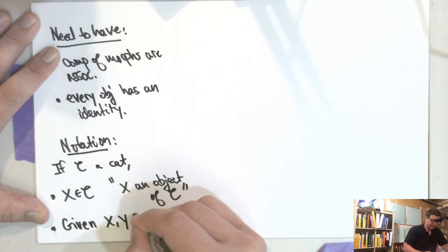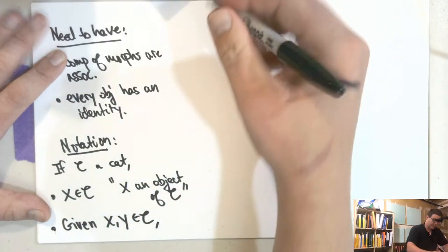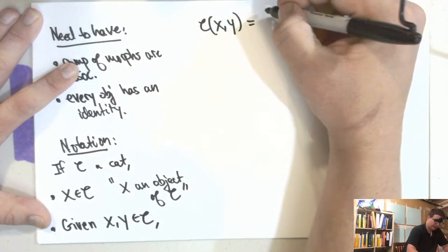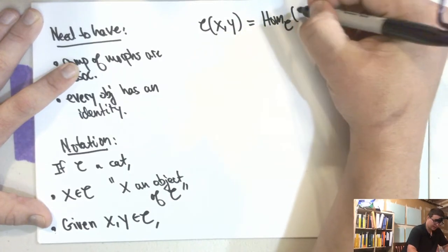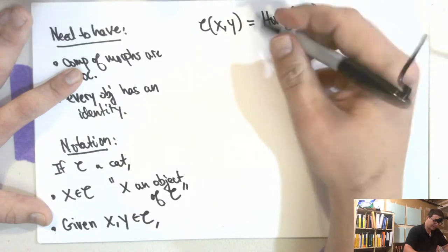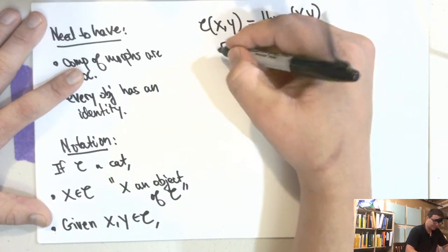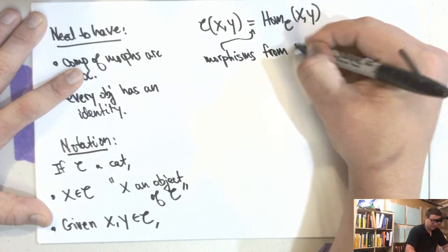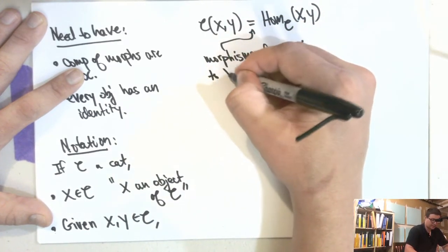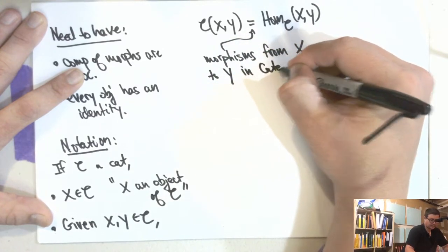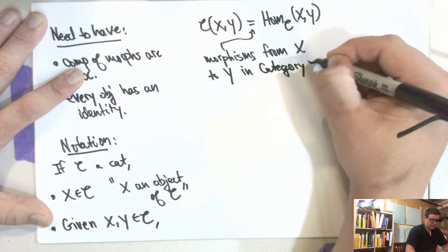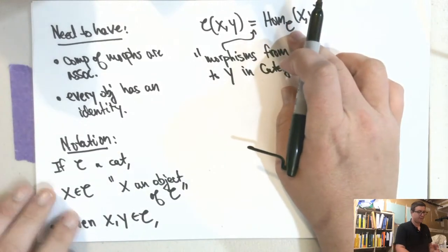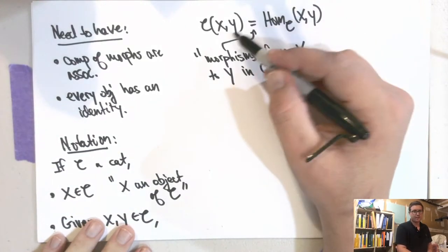Given two objects, we sometimes write C(X, Y) or Hom_C(X, Y) for the morphisms from X to Y in category C. Sometimes it's ambiguous if you just write Hom without specifying C — for instance, if you have two abelian groups and just write Hom, it's unclear whether you mean a map of sets or an abelian group homomorphism, and those are different things.